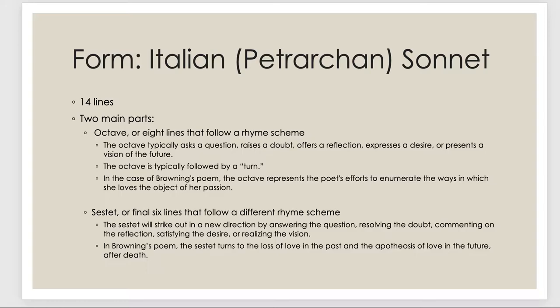So, form. It is in a sonnet form. And sonnets are 14 lines with specific rhyme schemes. There are two main parts of them, of any sonnet. The octave are eight lines that follow a rhyme scheme. It usually asks a question, raises a doubt, etc. You can see this bullet here. And then it's followed by a turn, which is the sestet, or the final six lines that follow a different rhyme scheme. And it tries to strike out in a new direction that will answer the question or resolve the doubt or something like that. In the case of the specific poem, in Barrett Browning's poem, the octave represents the poet's efforts to number the ways that she loves the object of her passion. And then the sestet turns and talks about the previous loss of love in the past and how loss in the future will be overcome because of her great love, right? So this is a very specific form.